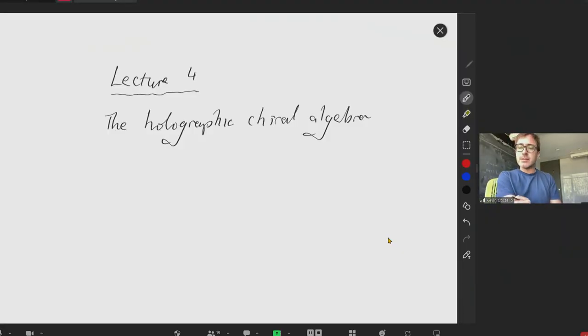So for this lecture, I actually didn't get a chance to prepare slides in advance, so I'm going to write as I go. What I want to discuss today is how to do some computations with Witten diagrams, just like in traditional AdS-CFT, but in this topological string context.